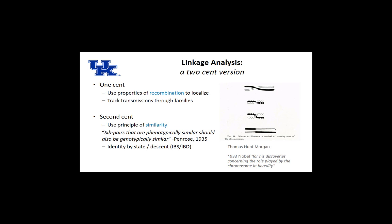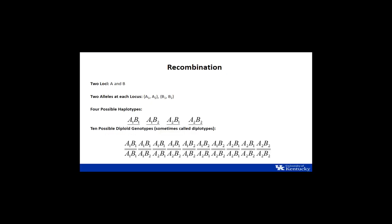The second cent — the principle of similarity. Tim mentioned IBD, identical by descent. The idea is that sib pairs that are phenotypically similar should also be genotypically similar. If we see similarities in siblings phenotypically more than we'd expect, we expect there to be similarities genotypically. These ideas of identical by state or descent for a particular allele inform us of parametric and nonparametric ways of identifying linkage — narrowing down where we think genetic susceptibility is.